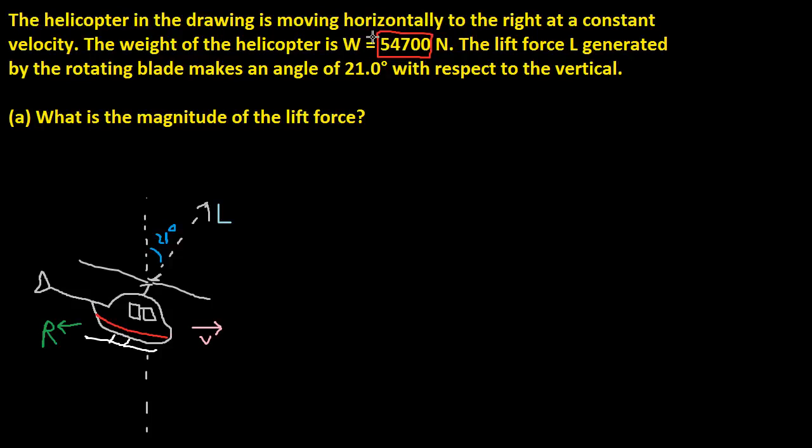Hi, we have this helicopter problem from the website. It says this helicopter is moving horizontally to the right at a constant velocity, and the weight of the helicopter is 54,700 newtons. The lift force L is generated by the rotating blade that makes an angle of 21 degrees with respect to the vertical.